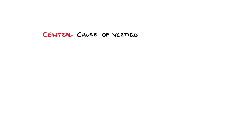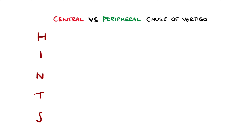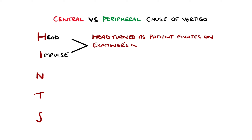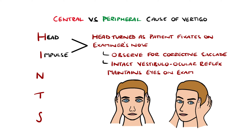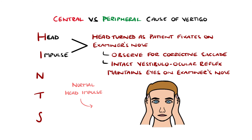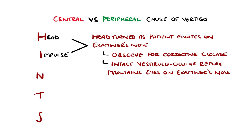The HINTS exam is used to distinguish a central cause of vertigo from a peripheral cause, though it should only be used when nystagmus is present. It stands for Head Impulse, where the patient is asked to fixate on the examiner's nose as they hold the patient's head and turn it suddenly to either side. The vestibulo-ocular reflex is an arc that keeps the eyes focused on the target as the head moves. In peripheral causes like neuritis, this reflex is disturbed and the patient will be unable to automatically focus on the nose as the head is turned, leading to a corrective saccade. In central causes, this reflex remains intact.